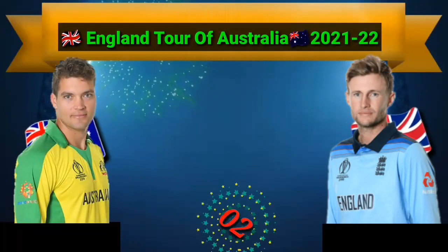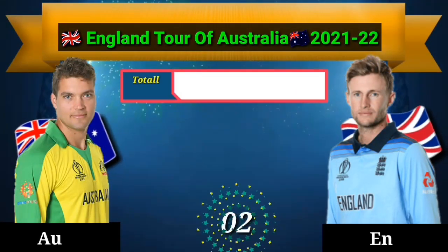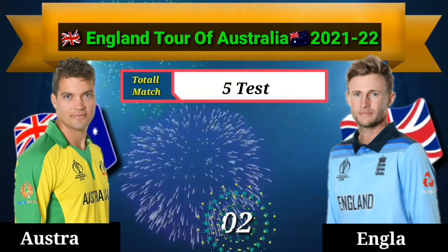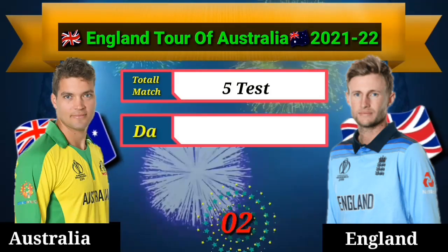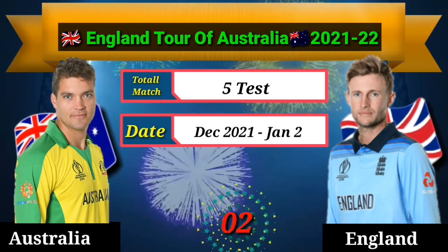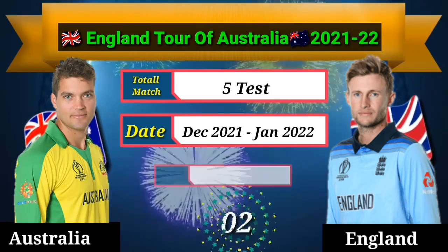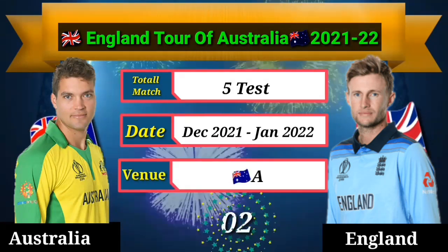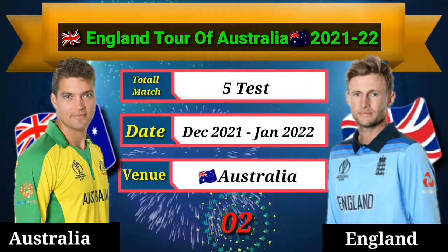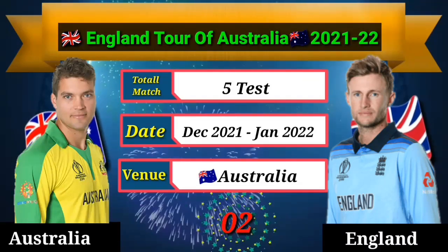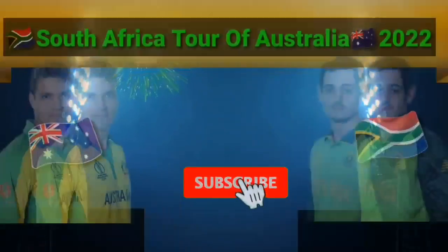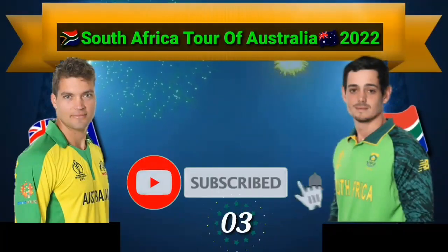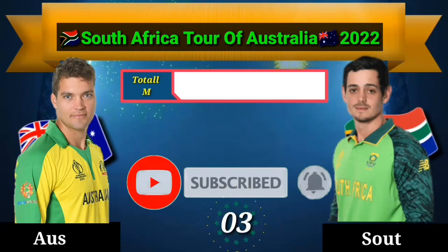Australia Cricket Team Upcoming Series No. 2: England Tour of Australia 2021-22, total matches 5 Test series, December 2021 to January 2022, venue: Australia.